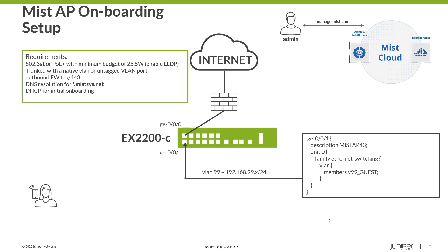The switch port it connects to needs to be either a trunk port with a defined native VLAN or an untagged VLAN assigned to it — we'll be using the latter. Next, the network that the AP connects to must have a DHCP server associated to it, and have internet access that includes outbound port TCP 443 to be open. Finally, all subdomains for the mistsys.net domain name need to be resolvable.